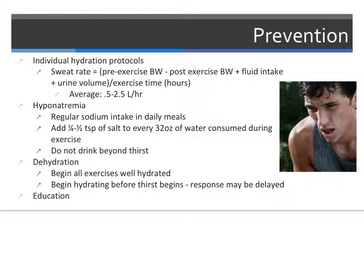Fluid loss can be calculated using sweat rate with the formula listed. The average person's sweat rate is between half and 2.5 liters per hour. To prevent hyponatremia, it is important to ingest sodium on a regular basis as part of your meals. The athlete may also want to add one-quarter to one-half a teaspoon of salt every 32 ounces of water. Dehydration can be prevented by beginning all exercises while hydrated and continuing to drink throughout exercise. Since the thirst response may be delayed, those concerned about dehydration should begin consuming fluid prior to the onset of thirst.